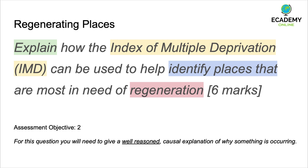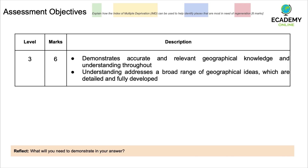The keyword in this question is 'explain' — that's the trigger word you need to be aware of. It's an assessment objective 2 level question. The index of multiple deprivation is something you need to be aware of, along with the seven indices that go within it. The question is asking you to identify specific places that you may have studied, and the focus is around regeneration. The mark scheme asks you to demonstrate accurate and relevant geographical knowledge and understanding throughout, and to understand a broad range of geographical ideas which are detailed and fully developed.